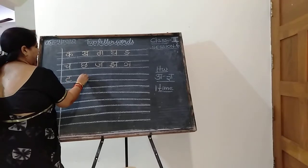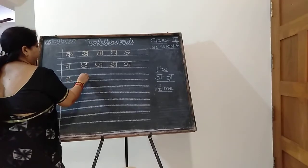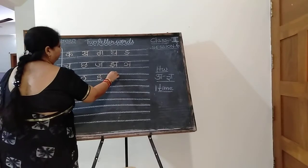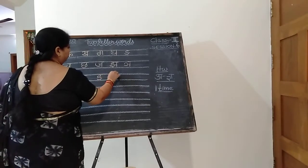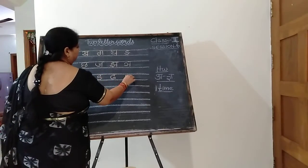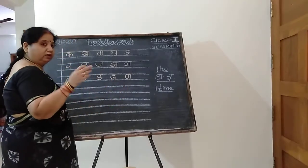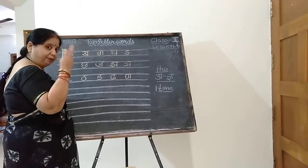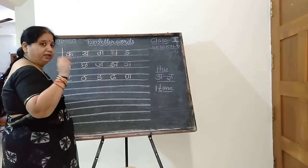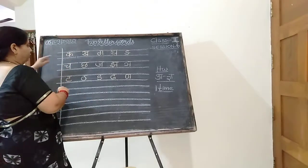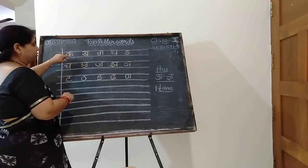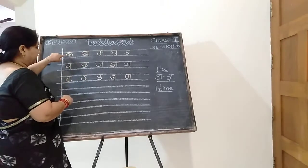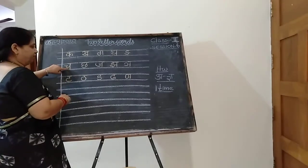Third row starts from Tha — Tha se Tamatar, Tha se Thatera, Tha se Damru, Tha se Dhakkan, Na se Khali. Please children, recollect the picture names and write. It will be very easy for you all, and there will be no confusion writing from first row to second row. Second row starts from Ch, third row starts from Tha.